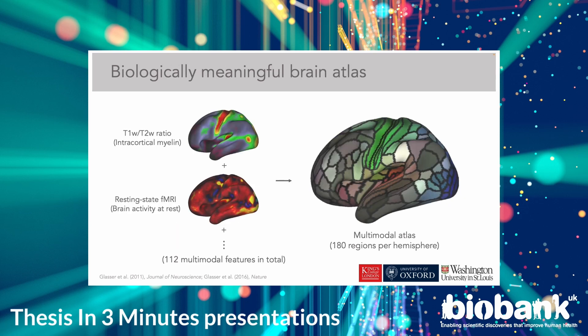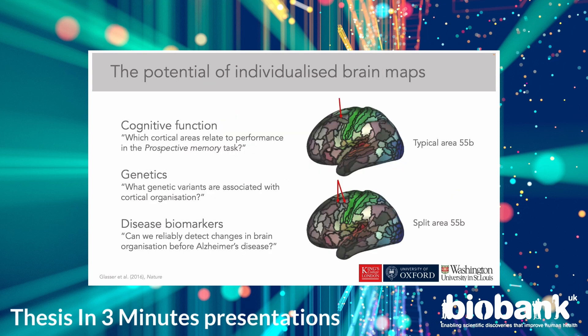In 2016, the Human Connectome Project generated a more biologically meaningful map of the cortex using features that better represent brain function and organization. These features include the T1 over T2 ratio, which is a measure of intracortical myelination, and resting state fMRI maps, which highlight cortical regions that share the same activity over time. The true potential of this brain mapping approach lies in the ability to generate cortical maps specific to each person, capturing subtle variability in brain organization across tens of thousands of UK Biobank subjects to tackle very complicated questions with more confidence.